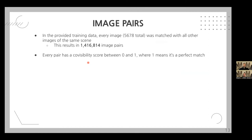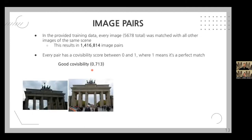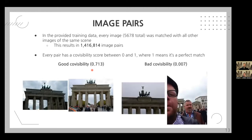An overview of the dataset shows one image per scene, and we can immediately see that every image has a slightly different aspect ratio and pixel size. Sometimes there's a person in the picture, sometimes the view is obstructed by a bush, and some pictures even had Instagram filters — all of which makes image matching very challenging. The dataset included a co-visibility score per image pair between 0 and 1, where 1 is a perfect match. For example, a score of 0.7 shows the Brandenburg Gate from a slightly different angle, while a score of 0.007 shows a selfie with only a small part of the gate visible in the background.